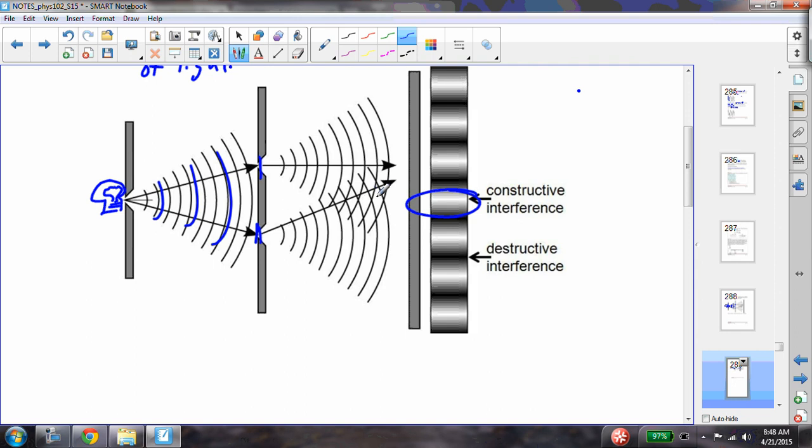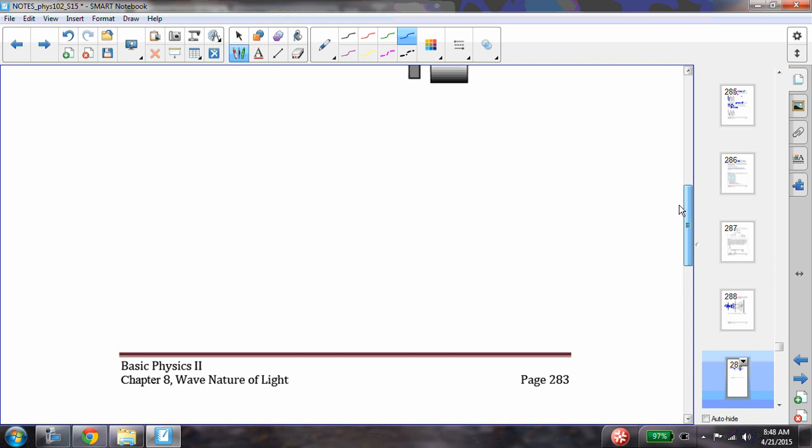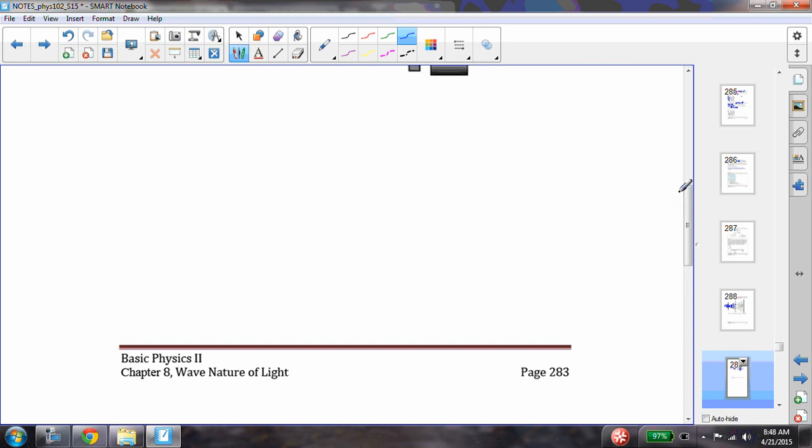So when I have two peaks that line up, I get constructive interference, and when I get two troughs that line up, I get destructive interference. So what you get on the screen is you get bright spots and you get dark spots. And he demonstrated this through this double slit experiment.